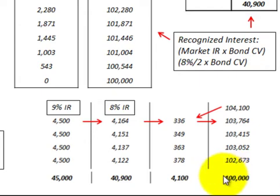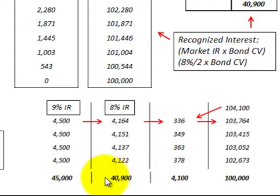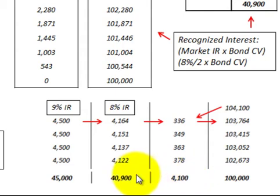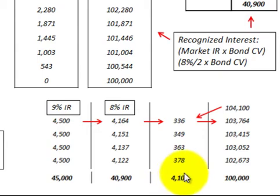That $100,000 is the bond's carrying value when it matures. Looking at the totals: we received ten payments of $4,500 each, totaling $45,000 in interest receivable. The interest revenue recognized on those payments totaled $40,900. The difference between those two amounts is $4,100 — the total premium to bonds receivable — which was amortized down to a zero balance.